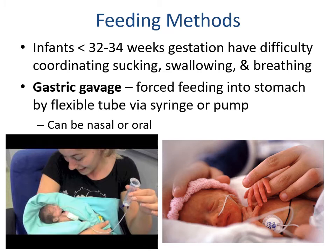Infants less than 32 to 34 weeks gestation have difficulty coordinating suckling, swallowing, and breathing. We use gastric gavage — forced feedings into the stomach via a syringe or pump, either nasal or oral, similar to an NG tube. This ensures nutrition goes into the stomach and avoids aspiration into the lungs.